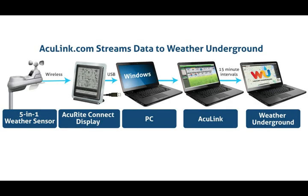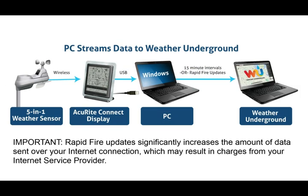There are two ways to stream data to Weather Underground. In the first method, the Accurate Connect software sends its data to Acculink.com, and Acculink sends your weather data to Weather Underground in 15-minute intervals. In the second method, the Accurate Connect software sends its data directly to Weather Underground in 15-minute intervals, or you can enable rapid fire updates to send data in 15 to 36 second intervals.